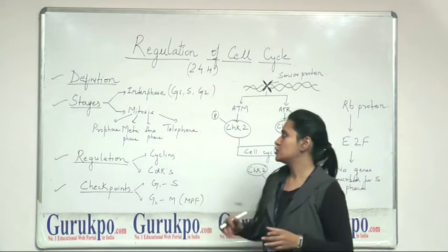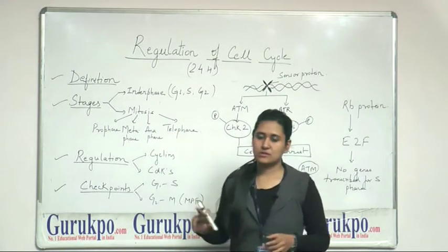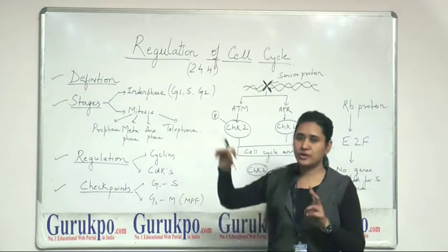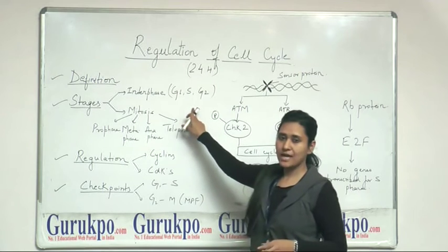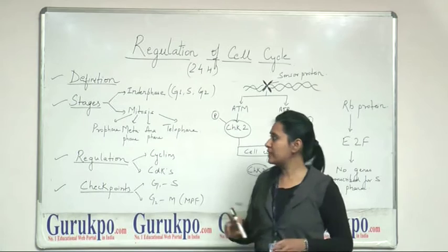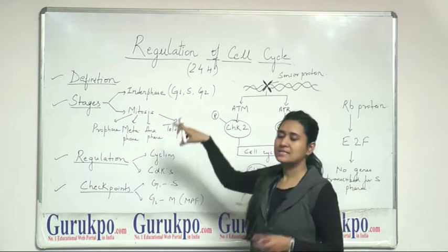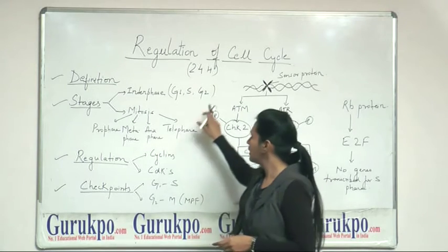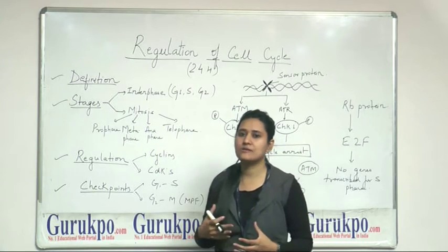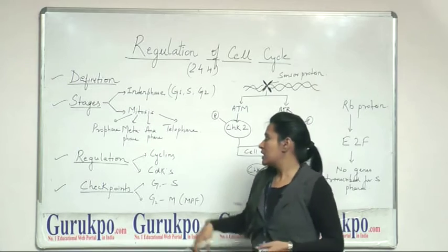This is divided into two main stages. First is interphase and the second is mitosis. Interphase stage is divided into three sub-stages, G1, S and G2. G1 stands for the gap 1 phase, S where the synthesis of DNA takes place and G2 is the second gap phase. In the interphase stage, a cell prepares itself to enter into the process of mitosis where it divides.